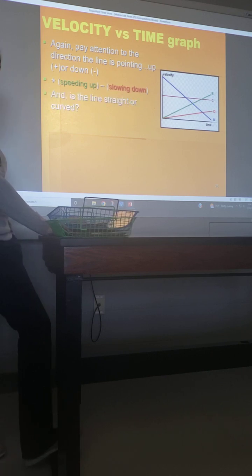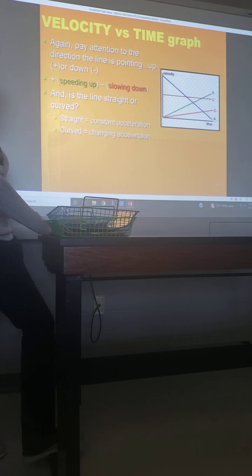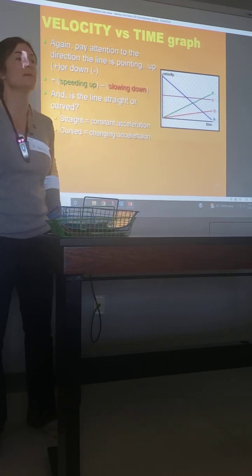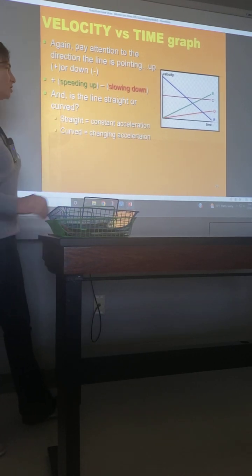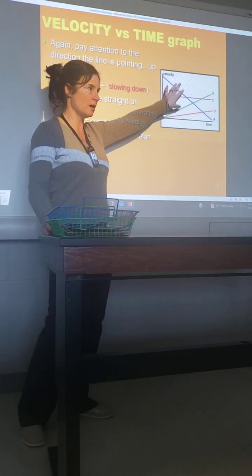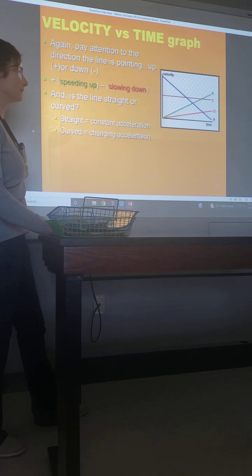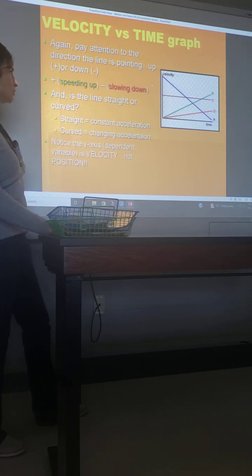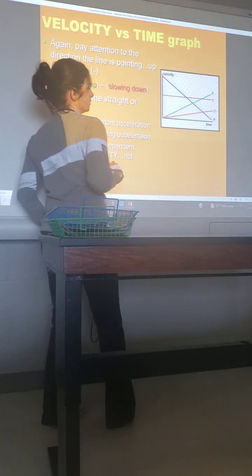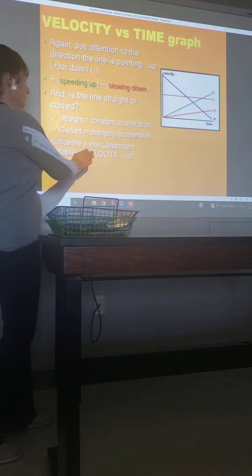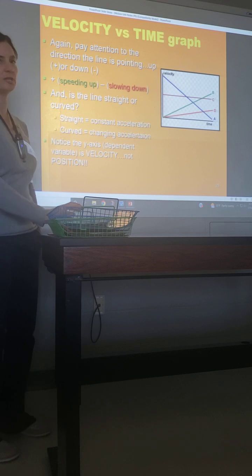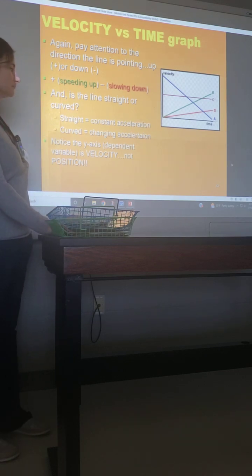Ask, is the line straight or is it curved? Straight means constant acceleration. Notice it's not constant speed or velocity now. It's constant acceleration. Curve is just going to be changing. Obviously all of these are showing constant acceleration, so nice and steady. Notice that the y-axis is velocity, and our x is still time. The difference is that it's now velocity and not position.